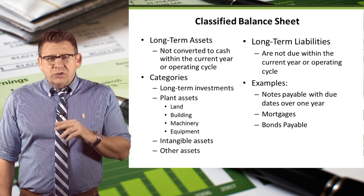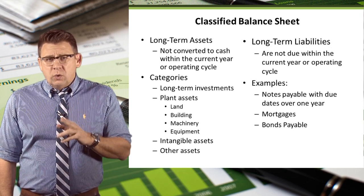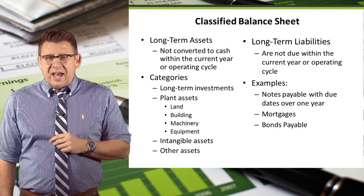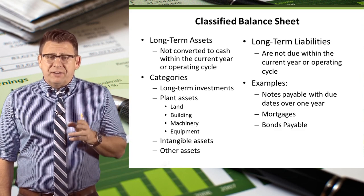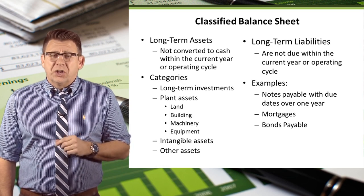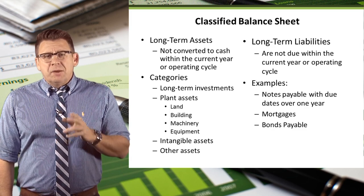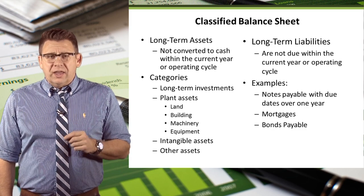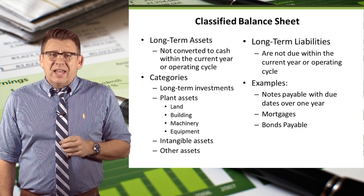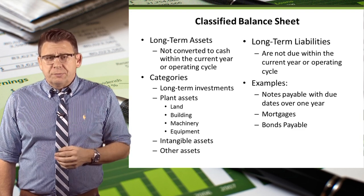Assets which have useful lives longer than one year, or will require more than one year to be turned to cash or sold, are classified as long-term assets, or sometimes called non-current assets. Liabilities which take longer than one year to pay off are classified as long-term liabilities, or sometimes called long-term debt.